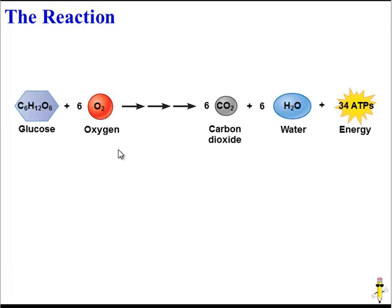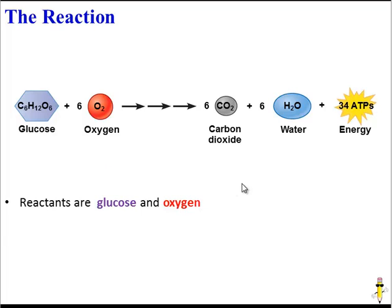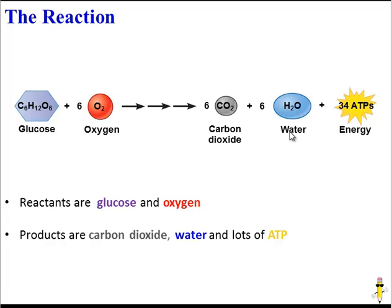Let's take a look at the reaction itself. In the reaction of cellular respiration, there are two reactants: glucose and oxygen. The products include carbon dioxide and water, which are really just waste products, and then the target product, ATP — usable energy.